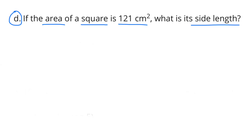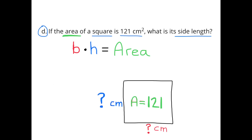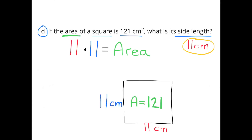6D: If the area of a square is 121 centimeters squared, what is its side length? To find the area you multiply base times height, and a square has all equal sides. So what number times itself equals 121? That would be 11, since 11 times 11 equals 121. The side length is 11 centimeters.